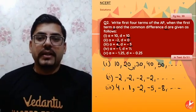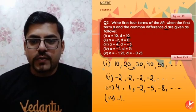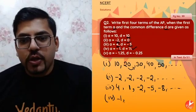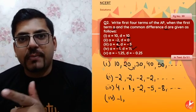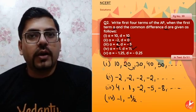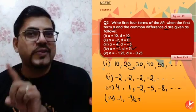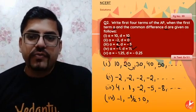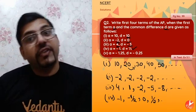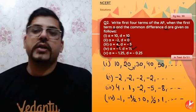Ab fourth question ki baat karte hain. First term is minus 1, and every time you will add 1/2. Minus 1 mein 1/2 add karo toh minus 1/2. Phir minus 1/2 mein 1/2 add karo toh minus 1/2 plus 1/2 = 0. Phir 0 mein 1/2 add karo toh 1/2. Phir 1/2 mein 1/2 add karo toh 1. So the AP is: -1, -1/2, 0, 1/2, 1...